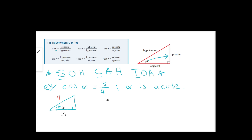We want to find all the trig functions. We already have cosine, so let's find sine of alpha. Sine is opposite over hypotenuse, so we have an unknown side we need to figure out. Luckily the Pythagorean theorem figured this out — whenever we have a right triangle we take the sum of the squares of the legs, which equals the square of the hypotenuse. So we call the legs a and b.